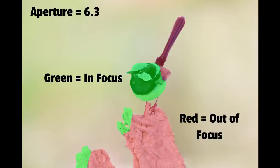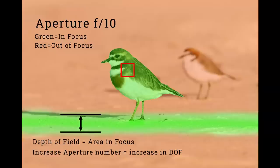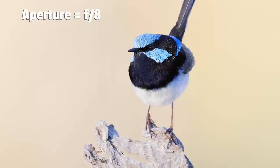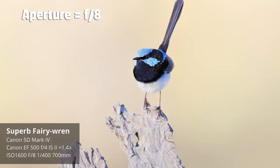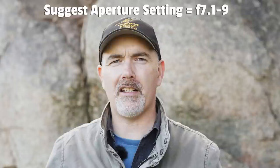We want all of the bird and all the perch in focus if we can. If we use a higher aperture number our depth of field increases so more of the bird and the perch will be in focus. As you can see with this next shot at f8, much more of the perch and the bird are in focus — a better overall image. For wildlife, for the sharpest possible images, I'd recommend using an aperture between f7.1 and f9.